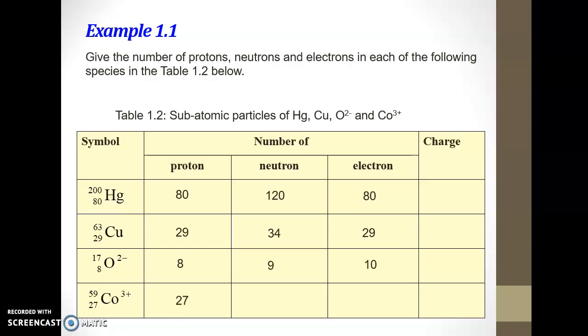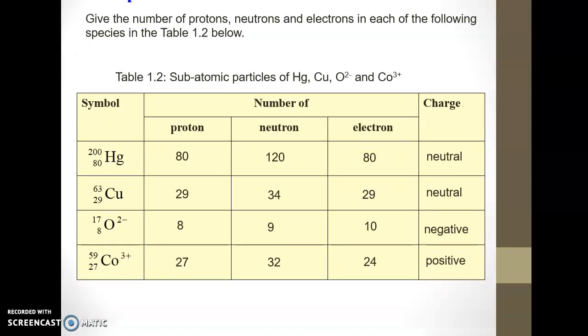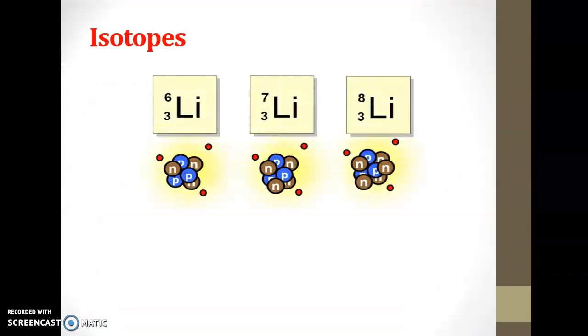Next, we're going to look at cobalt ion, which is a cation. The proton number is 27. The neutron number is 22. The electron is 24. Why? Because cation lost electron. How many? 3. So, 27 minus 3 is 24. What is the charge for mercury? Neutral. Copper, neutral also. And anion gave negative charge. Cobalt ion is a positively charged species.